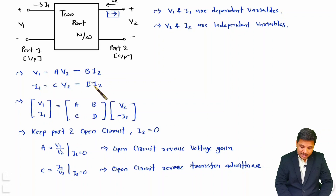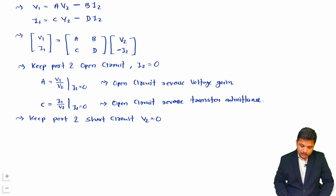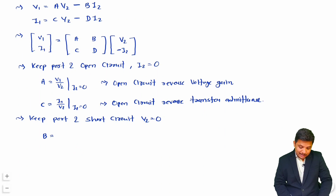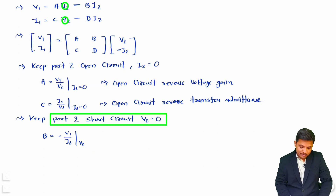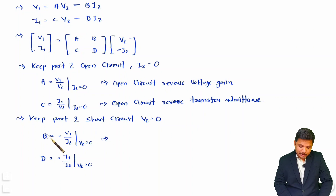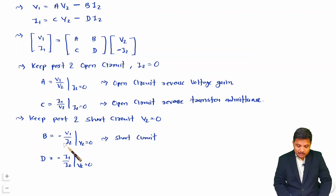To measure B and D, we set V2 = 0 by short-circuiting port 2. With V2 = 0, B = −V1/I2 and D = −I1/I2. B is a ratio of voltage to current, which is impedance. Since it is input voltage divided by output current, it is reverse transfer impedance measured at short circuit — so B is the short-circuit reverse transfer impedance.